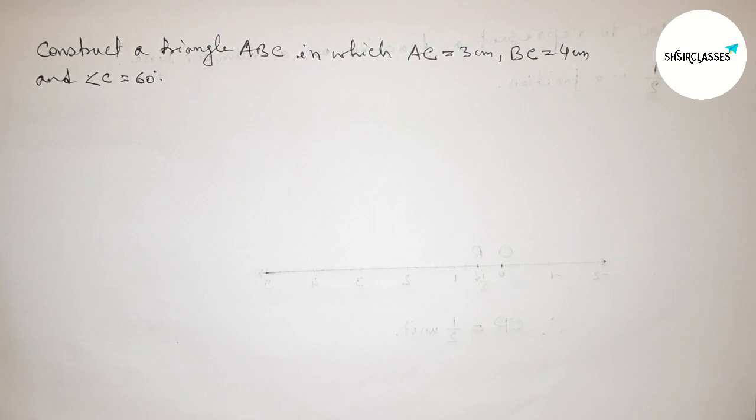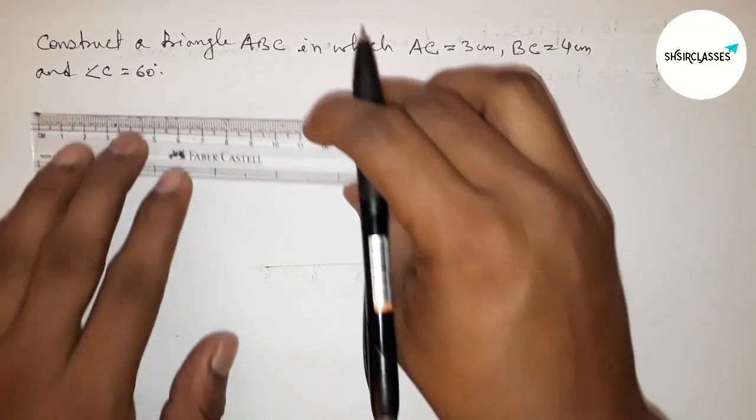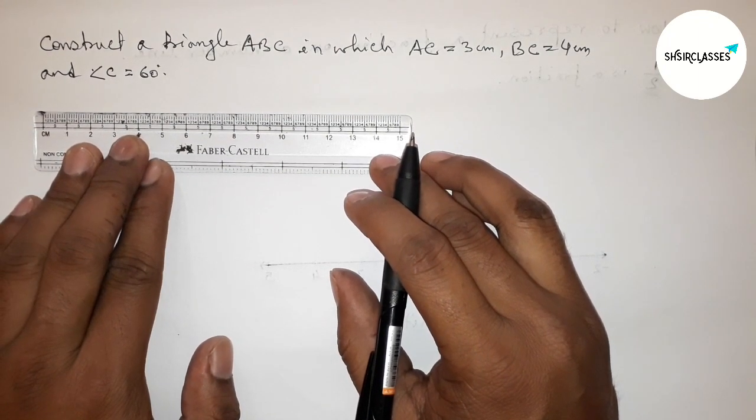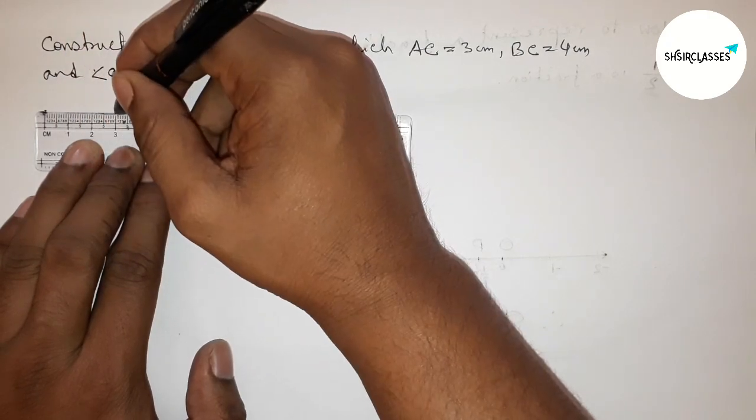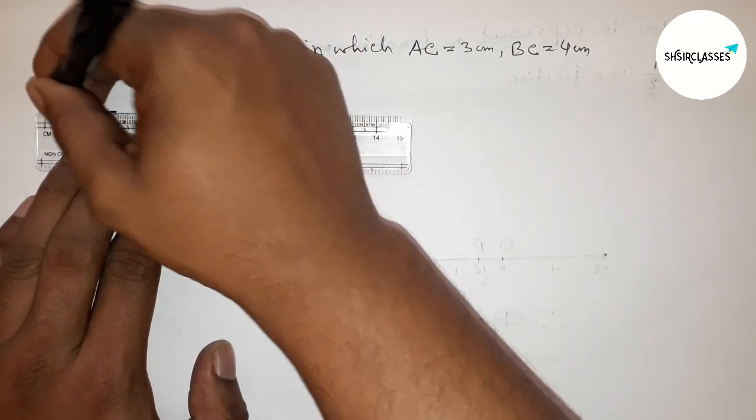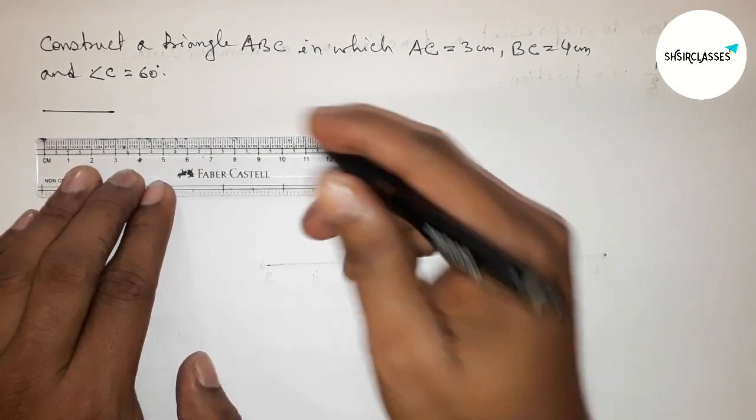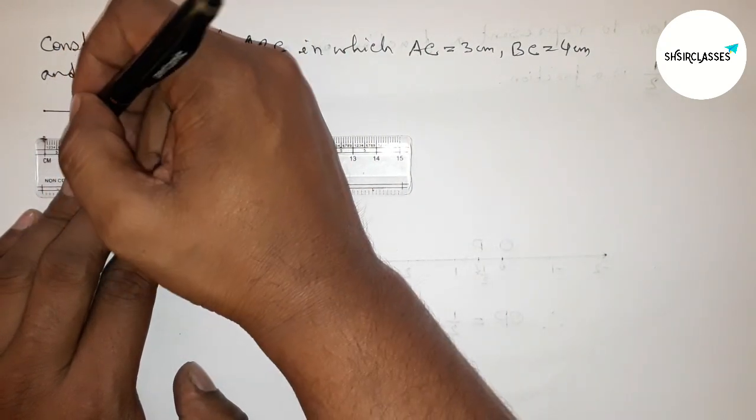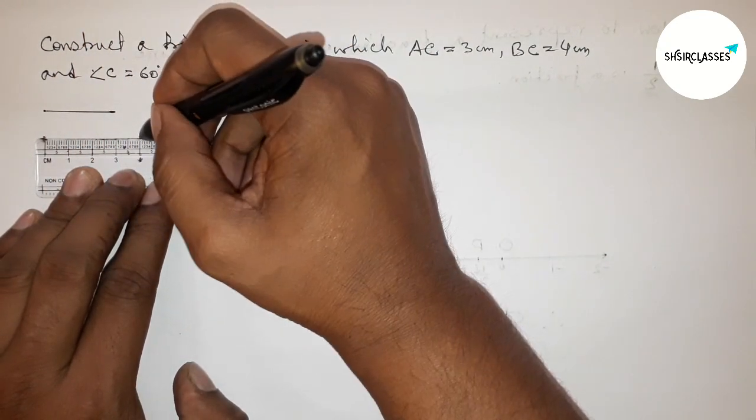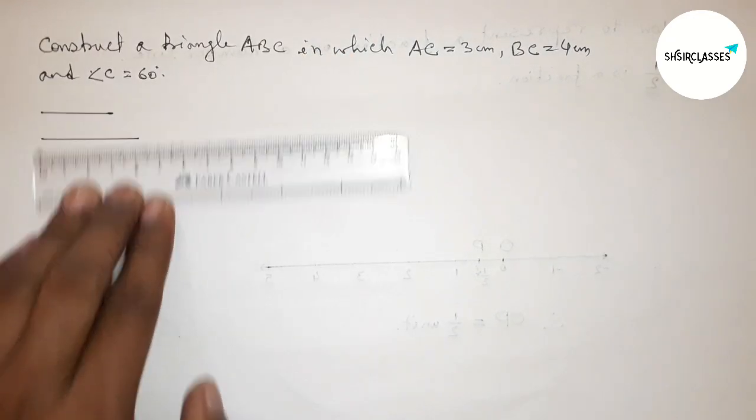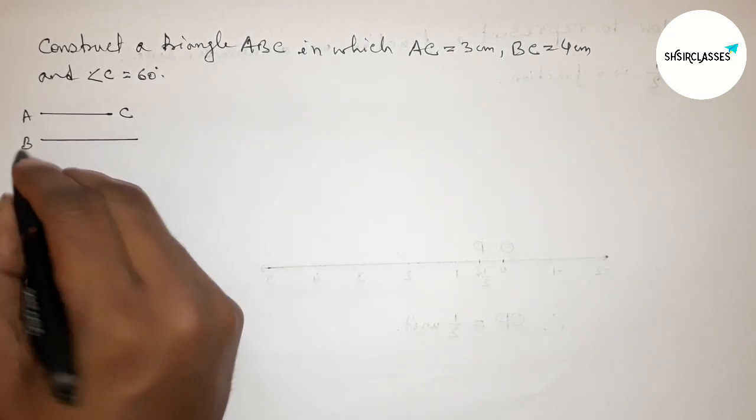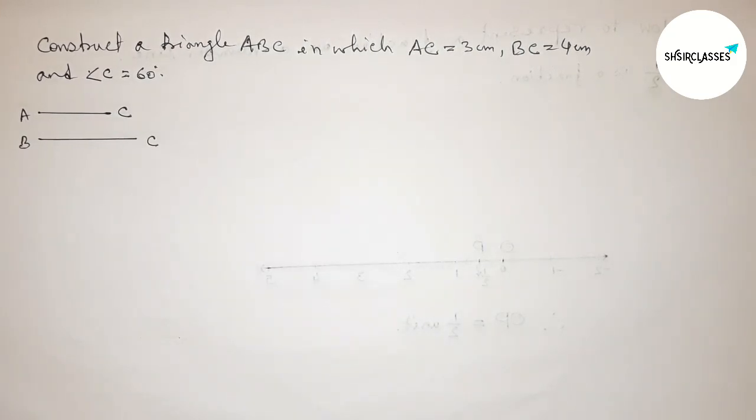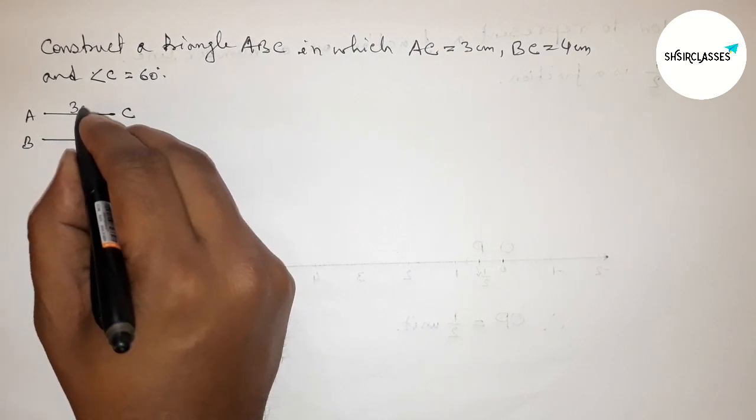Let's start the video. First of all, let us draw the given two sides. First, drawing 3 centimeters, so this is a 3-centimeter line. And drawing another line of 4 centimeters. This one is AC and this one is BC line. This is also 3 centimeters and this one 4 centimeters.